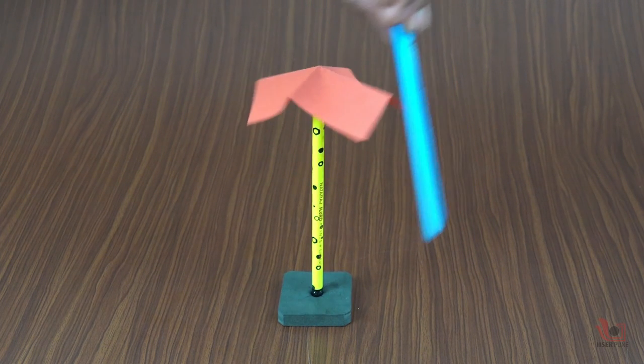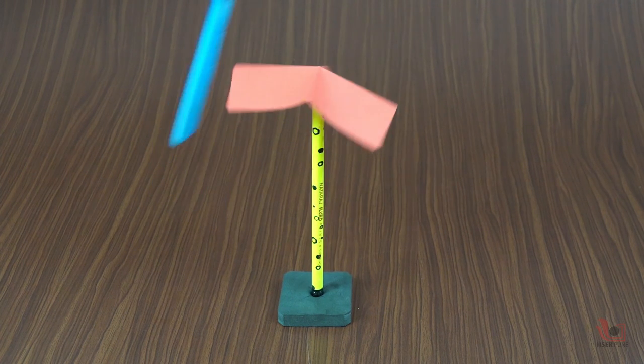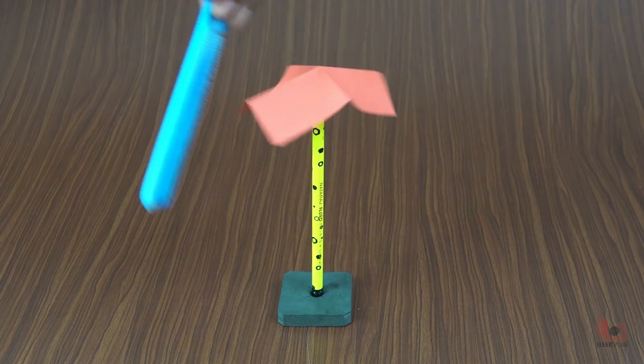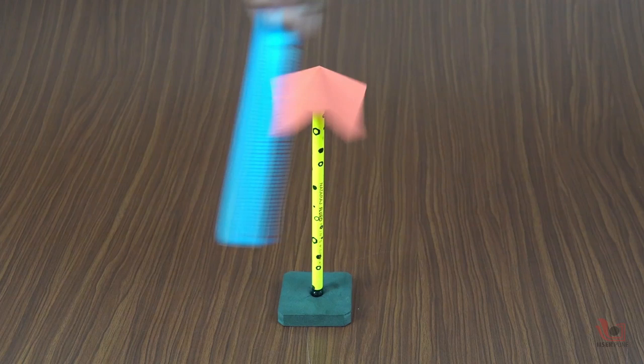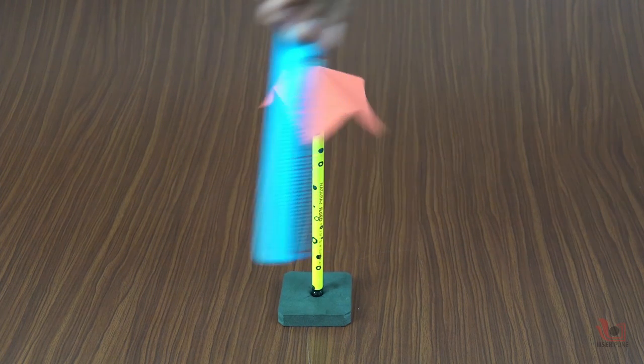When we bring the charged comb near the paper, it will get attracted towards the comb. And when we rotate the comb, the paper will follow the comb and rotate around its axis.